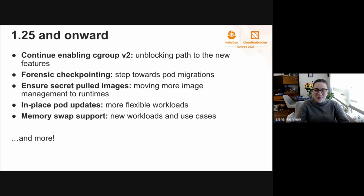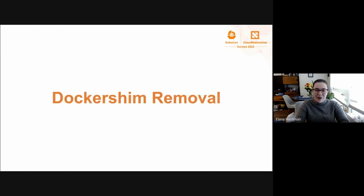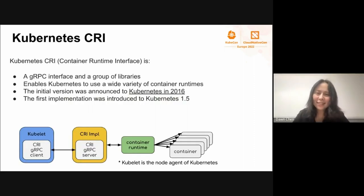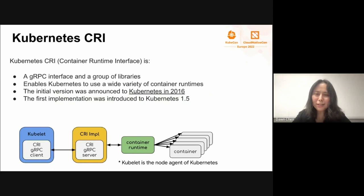If you want to hear more about those features, you can join us at a SIG Node meeting. Let's do a deeper dive into one of our major areas. I believe Dong will be talking about Docker shim removal. Before getting into Docker shim removal, I want to briefly talk about the Kubernetes Container Runtime Interface, CRI. It is a gRPC interface which defines how kubelet — the agent running on every node — interacts with a wide variety of container runtimes.